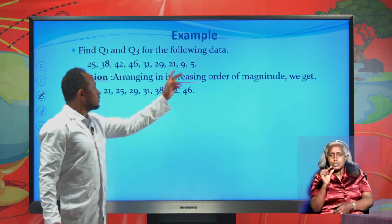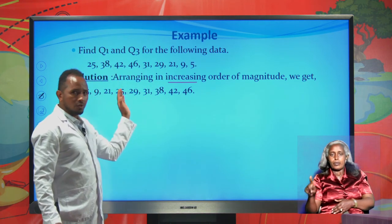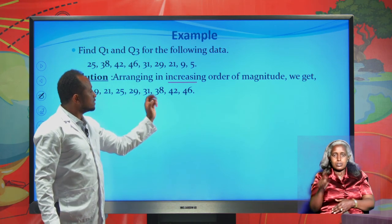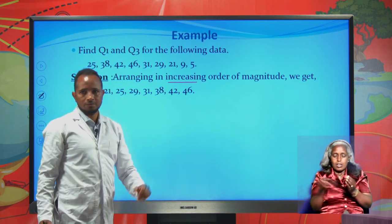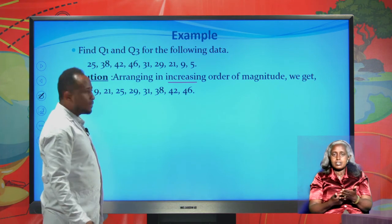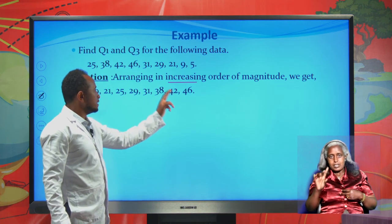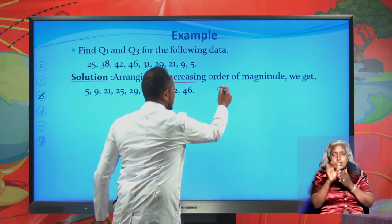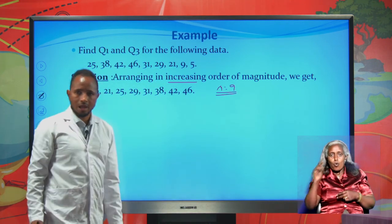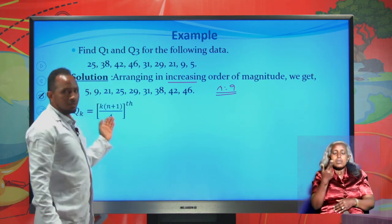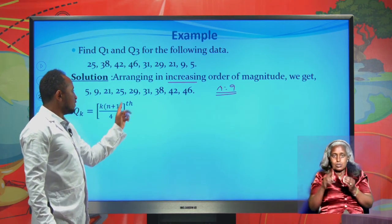The smallest value is 5, then 9, 21, 25, 29, 31, 38, 42, 46. We arranged this data in increasing order. How many data do we have? Counting: 1, 2, 3, 4, 5, 6, 7, 8, 9. The number of data is 9. We have an odd number of data, so we apply the formula: the k-th quartile is given by k(n+1)/4's item.